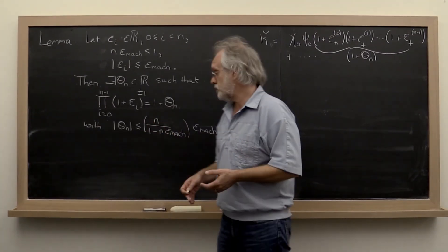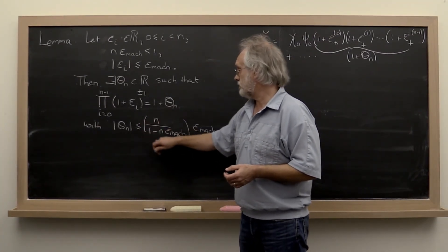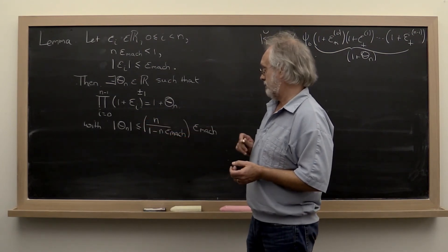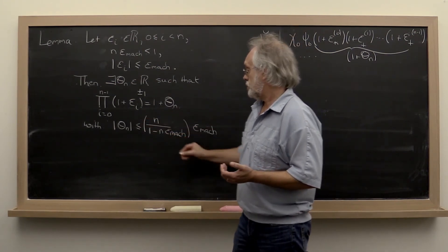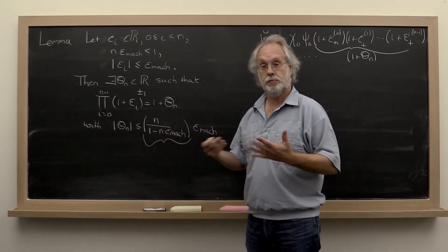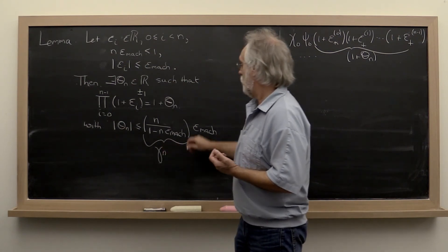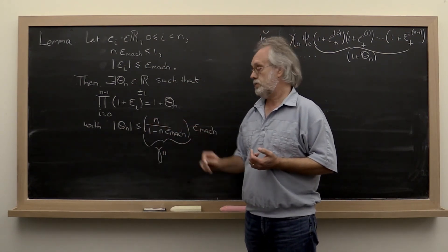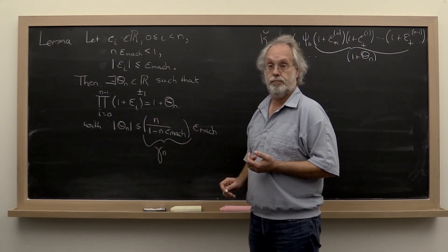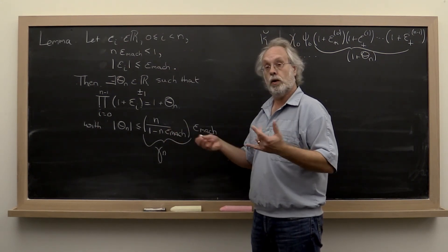Now in our further discussions, it's going to be cumbersome to always keep this constant that's a function of n around. So we're going to define a special constant, gamma sub n, which captures this right here. And that's actually what we're going to encounter when we do our analysis.